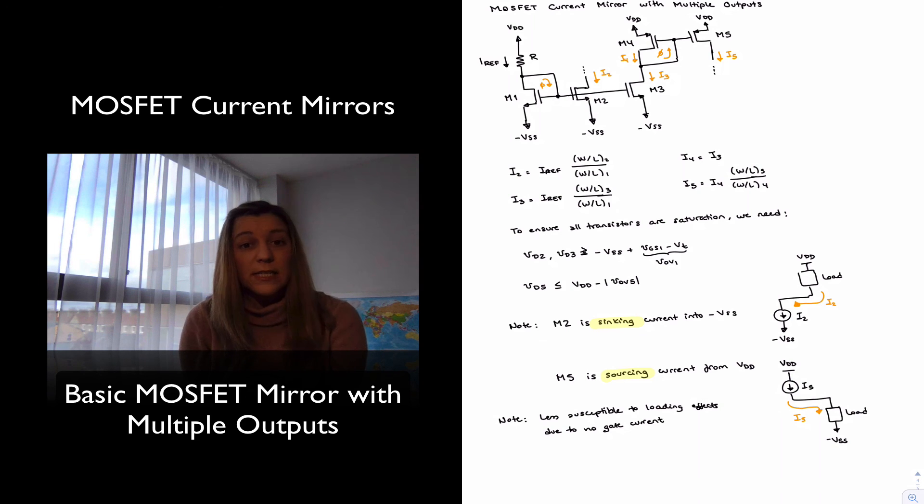Now, the reason why I say it's less susceptible and I don't just say it's completely impervious or it doesn't get affected by loading, it's because there are other things to consider not just the gate current, there are load capacitances and things like that, which will also affect the performance of the circuit. But at least we don't have to account for the effect of the base current, basically taking away accuracy as we increase the number of stages.